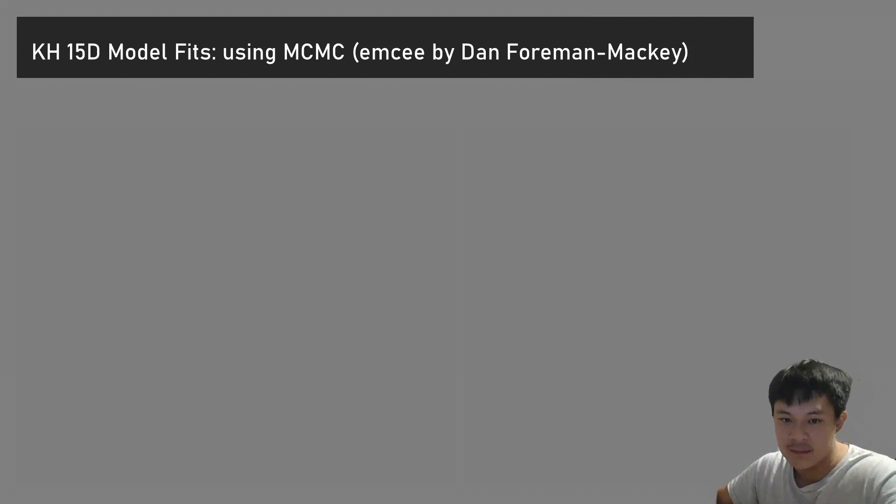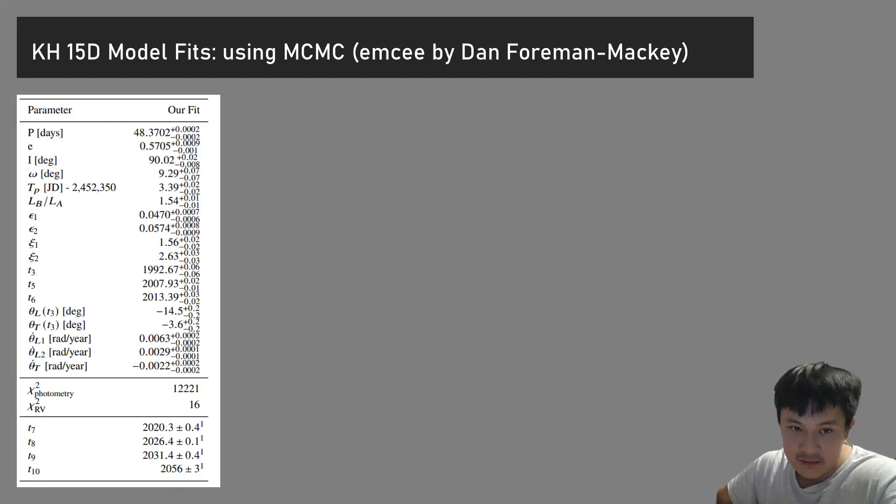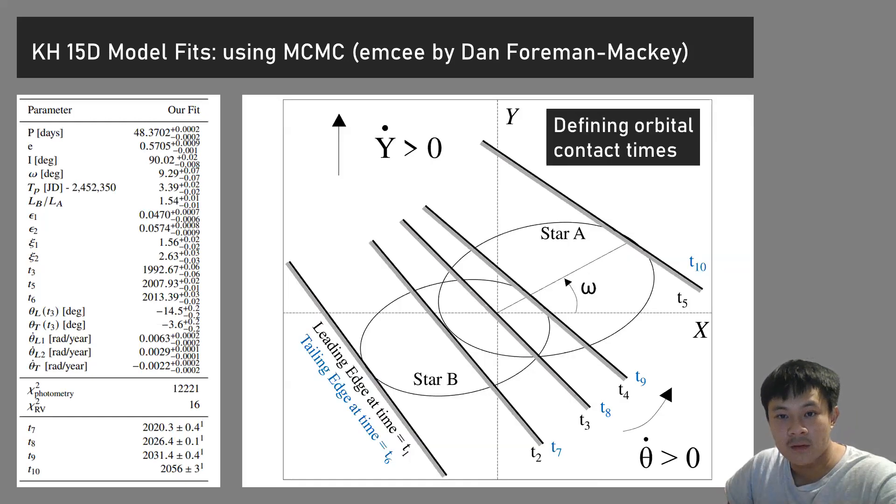We fit our model using MCMC. What I want to highlight is that there are orbital contact times, important parameters connecting the disk parameters to the binary parameters. When the edge lines up with the tangent of the binary orbit, you have orbital contact times. There are five for the leading edge, five for the tailing edge: t1 to t10. Our model uses values up to t6 because that's the time we have data for, but t7 and beyond haven't been observed yet. We can make predictions up to about t10, which is about 2050.